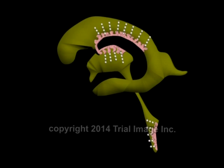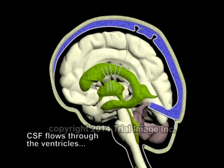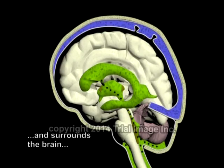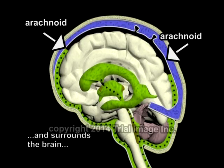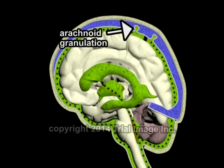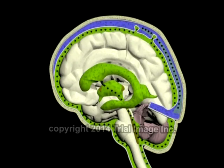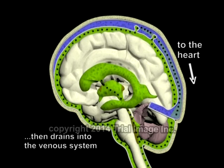The cerebrospinal fluid originates in the ventricles as a result of filtration of the plasma by the choroid plexus. It then flows, or circulates, through the ventricles, then surrounds the brain and spinal cord, where it is contained by a layer of the meninges known as the arachnoid. Through a series of outpouchings on the arachnoid known as granulations, the cerebrospinal fluid then flows into the venous sinuses of the brain, returning to the bloodstream from whence it originated.